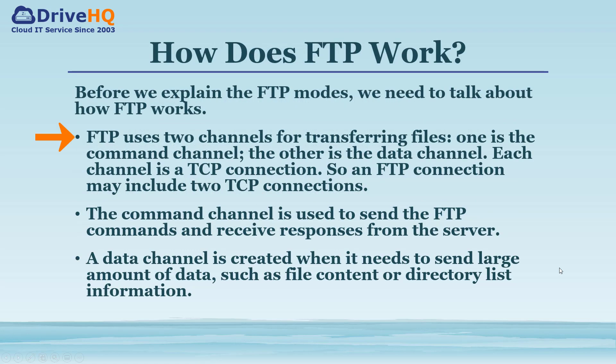FTP uses two channels for transferring files: one is the command channel, the other is the data channel. Each channel is a TCP connection, so an FTP connection may include two TCP connections. The command channel is used to send FTP commands and receive responses from the server. A data channel is created when it needs to send large amounts of data, such as file content or directory list information.